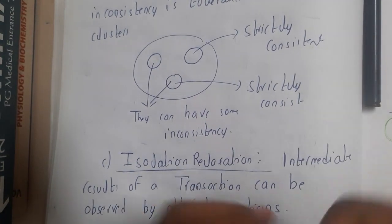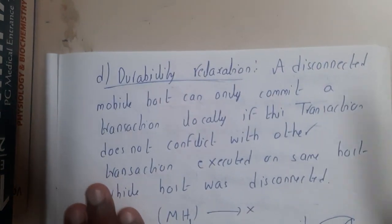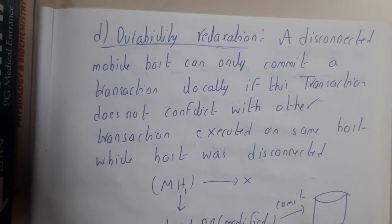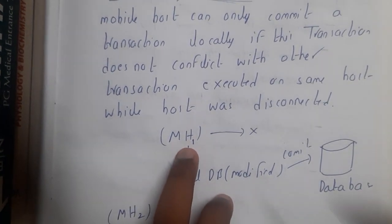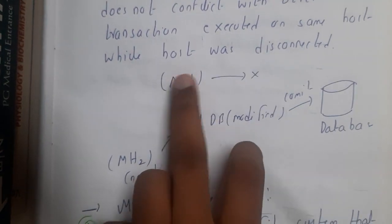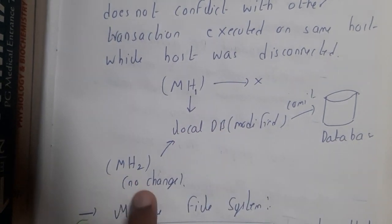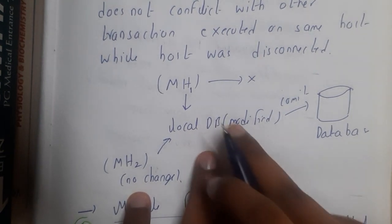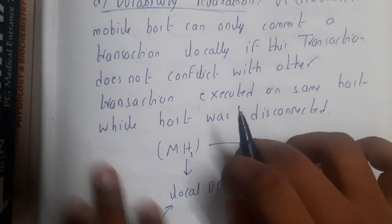And the last thing is durability. Durability is nothing but saving something permanently. Even if your mobile device is doing some modifications and suddenly your mobile device lost the connection, in that situation whatever changes it has been done on the database - if some other device connects to that particular internet or that particular database, these things should be committed first and then the editing should start. This concept is durability relaxation.